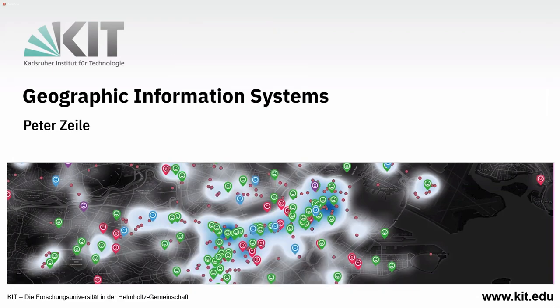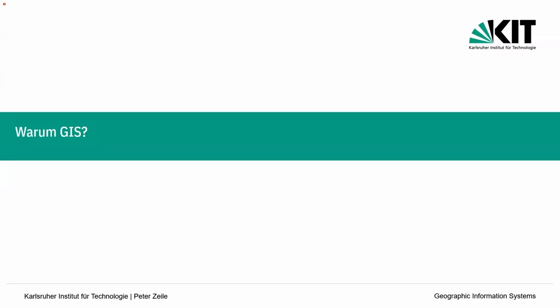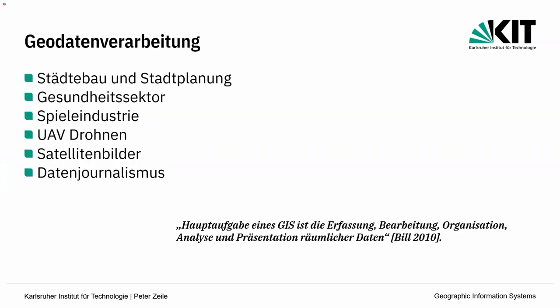Guten Abend zu meiner kleinen Einführung in Geographic Information Systems, kurz GIS genannt – ein Thema, das gerade auch für Architekten zunehmend interessanter werden kann. Die Frage stellt sich immer: Warum brauchen wir überhaupt ein GIS? Und da sind die Antworten verhältnismäßig mannigfaltig. Wir haben ganz viele Geodaten, die es in verschiedenen Repositorien und Datenquellen gibt.